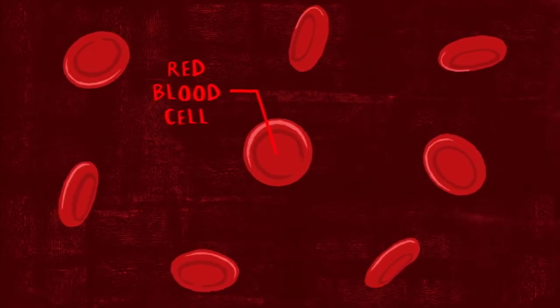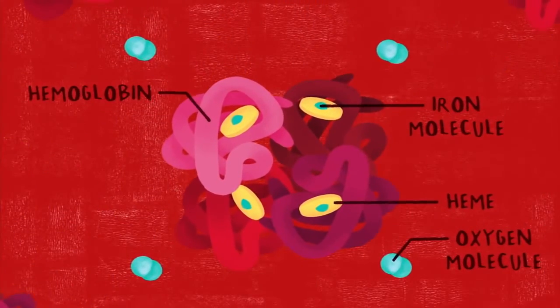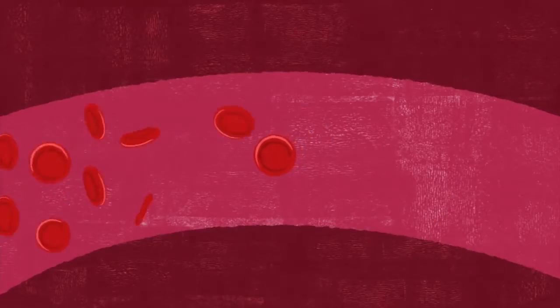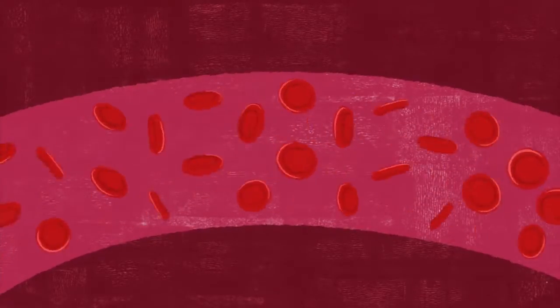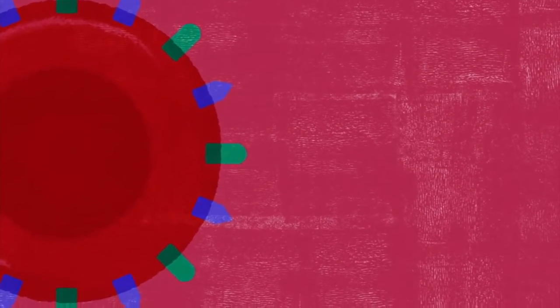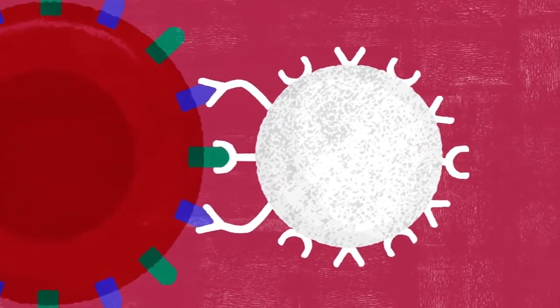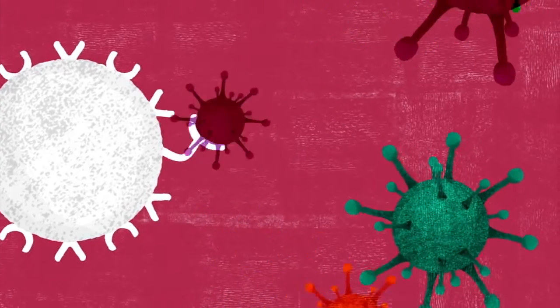Our red blood cells contain a protein called hemoglobin that binds to oxygen, allowing the cells to transport it throughout the body. But they also have another kind of complex protein on the outside of the cell membrane. These proteins, known as antigens, communicate with white blood cells, immune cells that protect against infection.